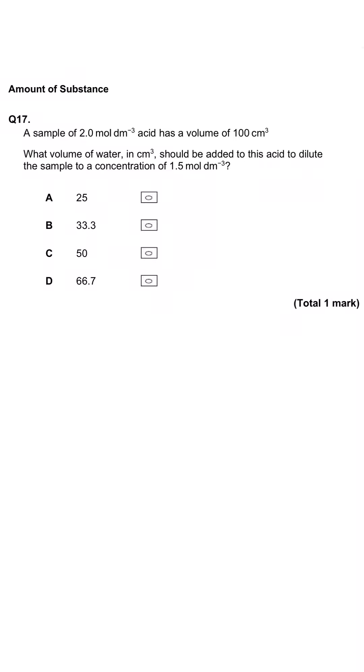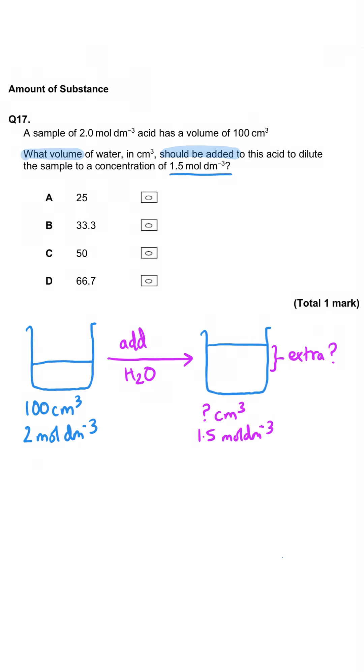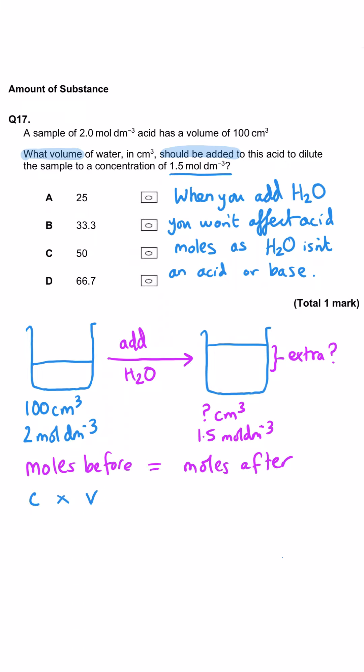This question asks about a solution of acid. We've got 100 cm cubed of it with a concentration of 2 moles per decimetre cubed, and we're asked what volume of water should be added to dilute its concentration to 1.5 moles per decimetre cubed. First of all, when you add water to the acid, it won't affect the moles of the acid. That means concentration times volume before dilution equals concentration times volume after dilution. We never even have to work out this value of moles.